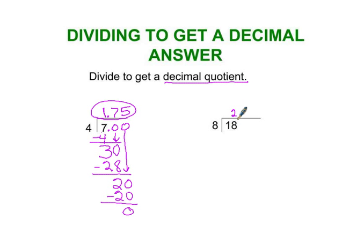Two times eight is sixteen. Subtract and get two. Cannot put two remainder two for this type of problem, so I have to put point zero. I put a decimal point up at the top. I bring down the zero, and eight goes into twenty how many times?